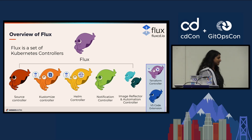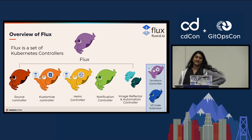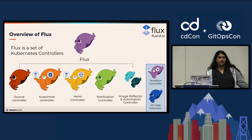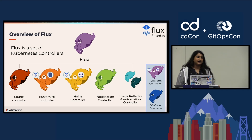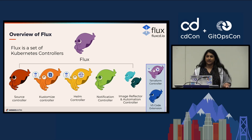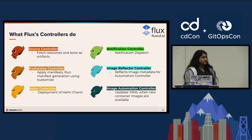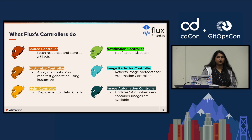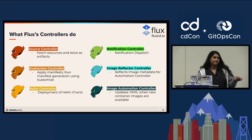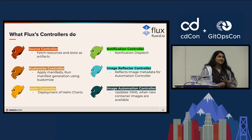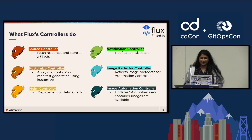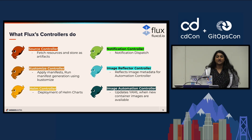A brief overview of the architecture of Flux: Flux is a set of Kubernetes controllers, which control the lifecycle of objects in Kubernetes — updating, creating, deleting, et cetera. The source controller pulls artifacts from your source, such as Git repos, S3 buckets, image registries, OCI registries, and Helm repositories. So it's not just Git. Then there's the kustomize controller — named as such because it uses kustomization files. You can use overlays, specify certain files to apply, and it looks for a kustomization.yaml in the folder you tell it to apply from.